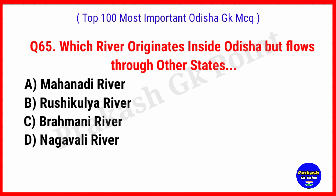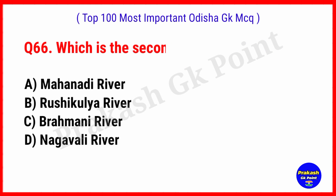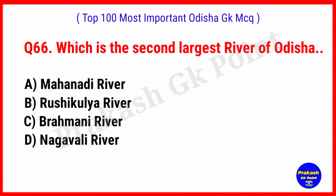Which river originates inside Odisha but flows through other states? Answer: Option D, Nagavali River. Which is the second largest river of Odisha? Answer: Option C, Brahmani River.